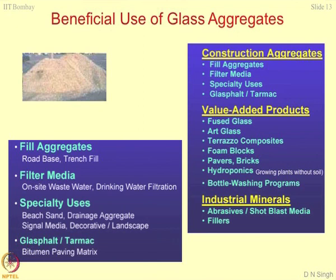Fused glass is when you alter the properties of crystalline glass by giving it some physicochemical mineralogical treatment or simply by crushing it. It becomes very active at elevated temperature. You can melt the entire glass and create a fused glass which is more reactive. Art glasses of different types are required for artwork. Terrazo composites — similar to terracotta which is a product from clay, but soil is also very scarce, so you can use these composites for decoration purposes. Foam blocks, paver blocks, brick blocks where glass is used as a filler material rather than sand and other aggregates.